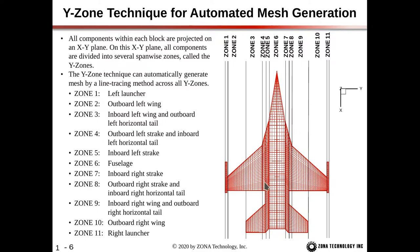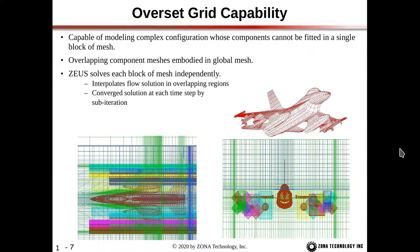A few notes: zones are numbered from left to right in Zeus — always go left to right. So zone one would be the left wing launcher, and then moving right, the right wing launcher is zone eleven.